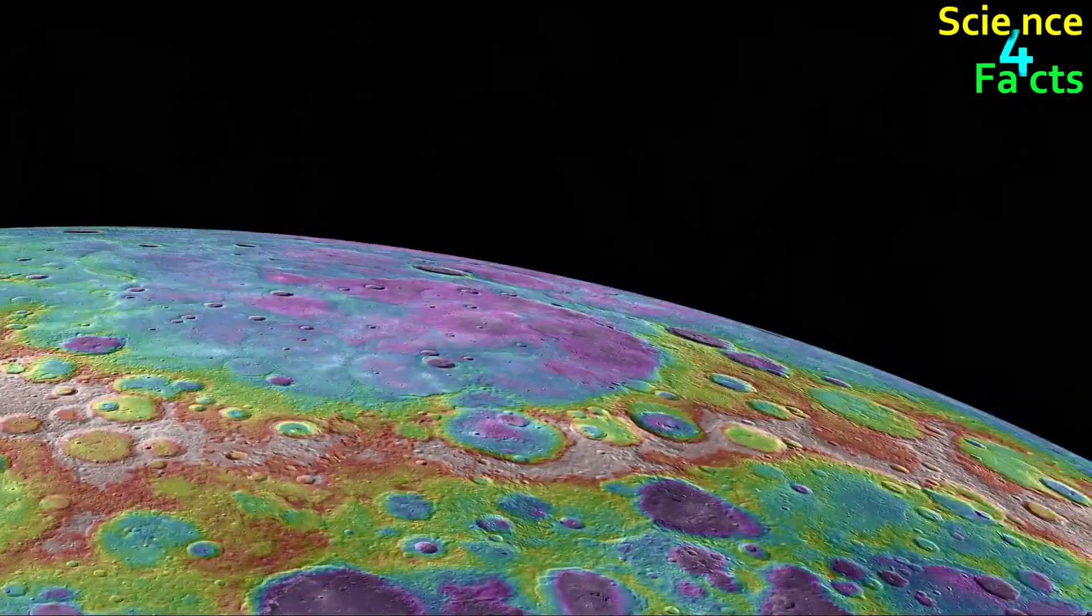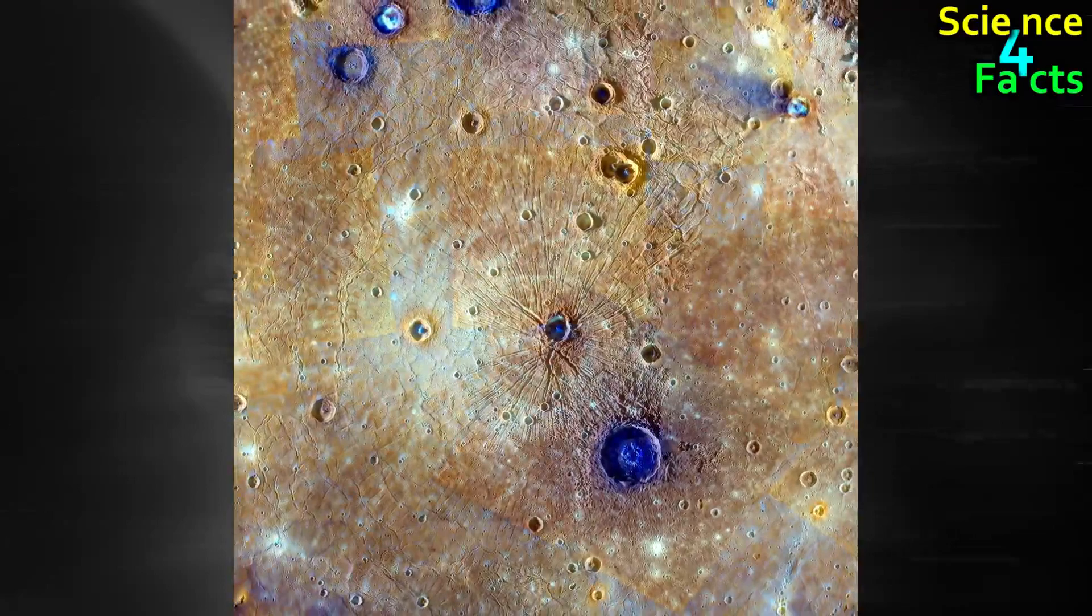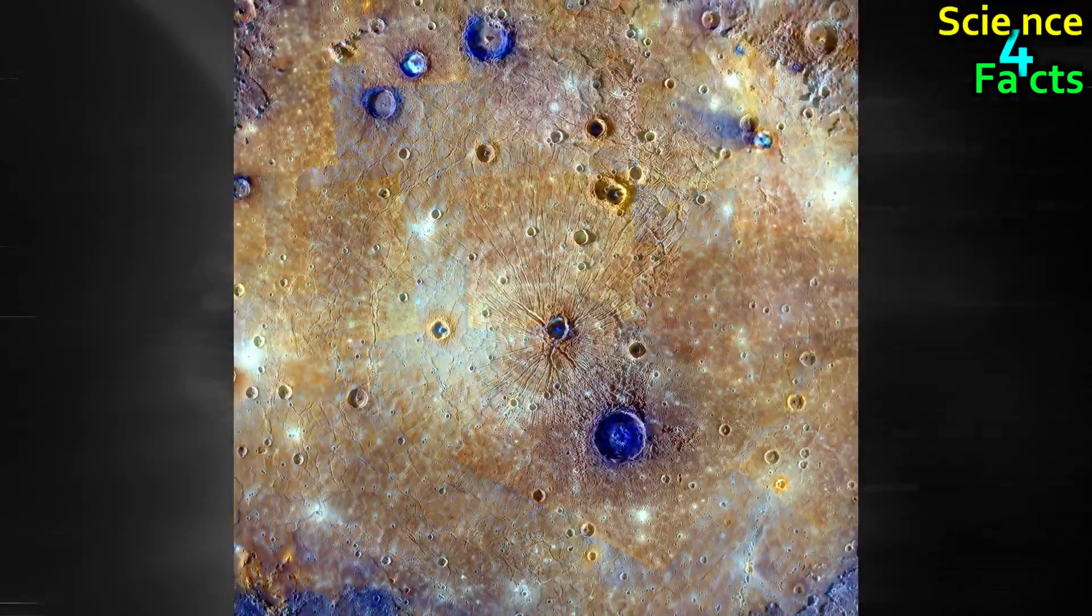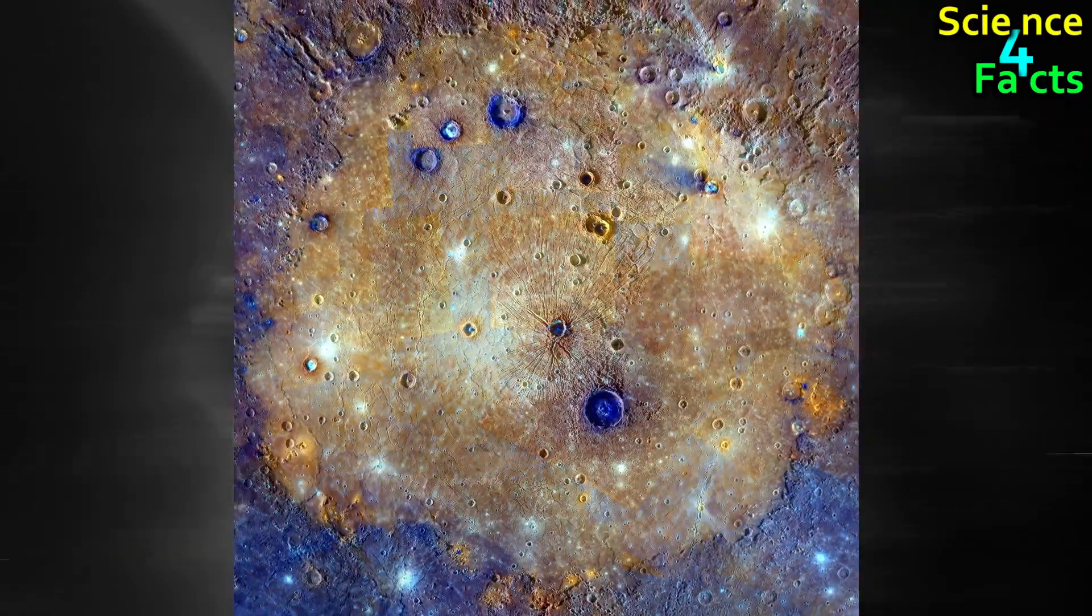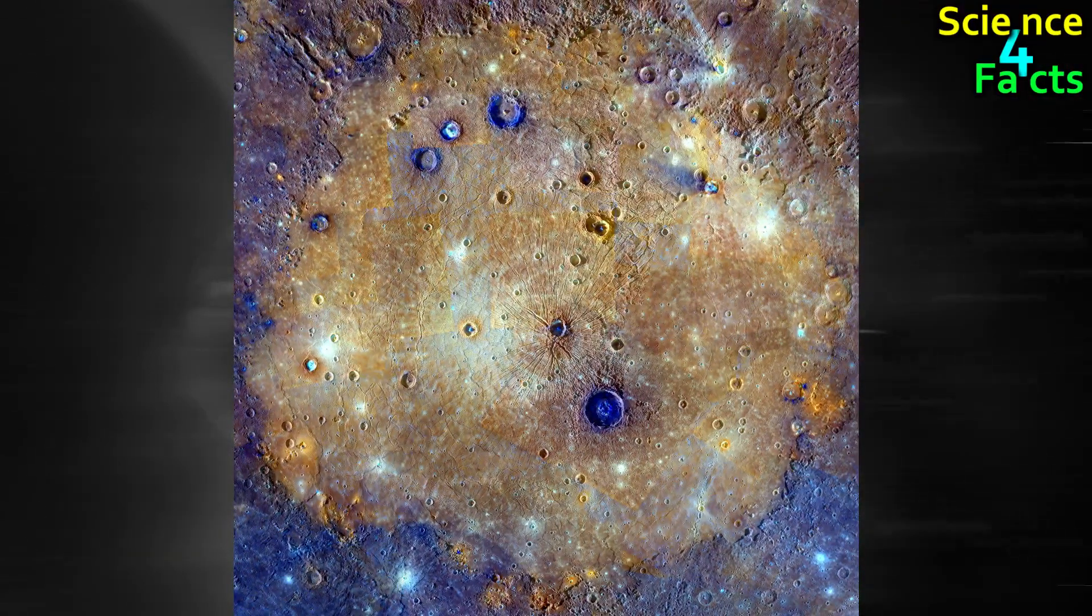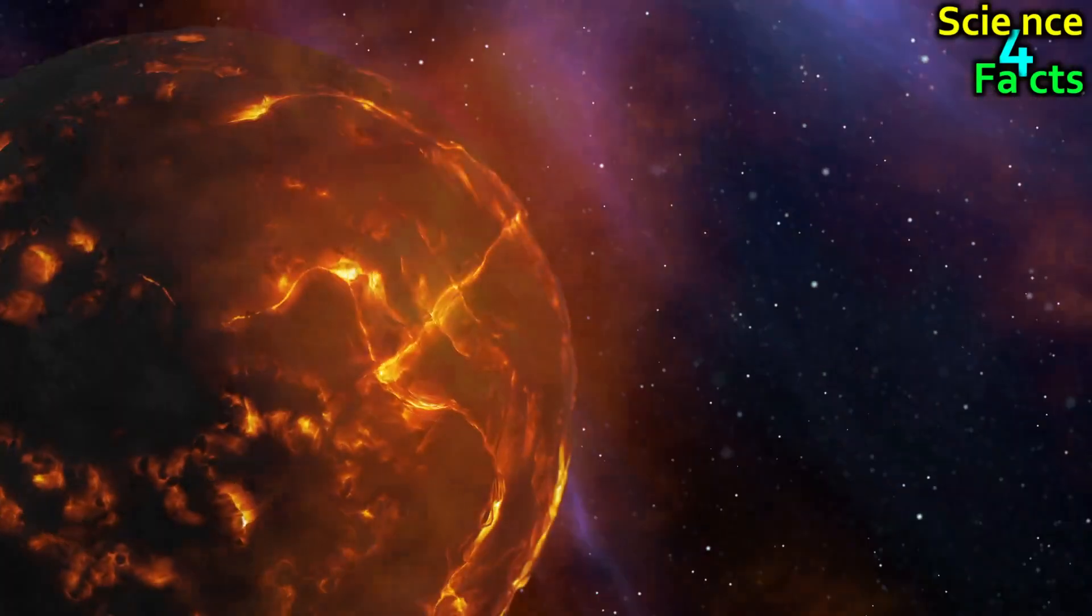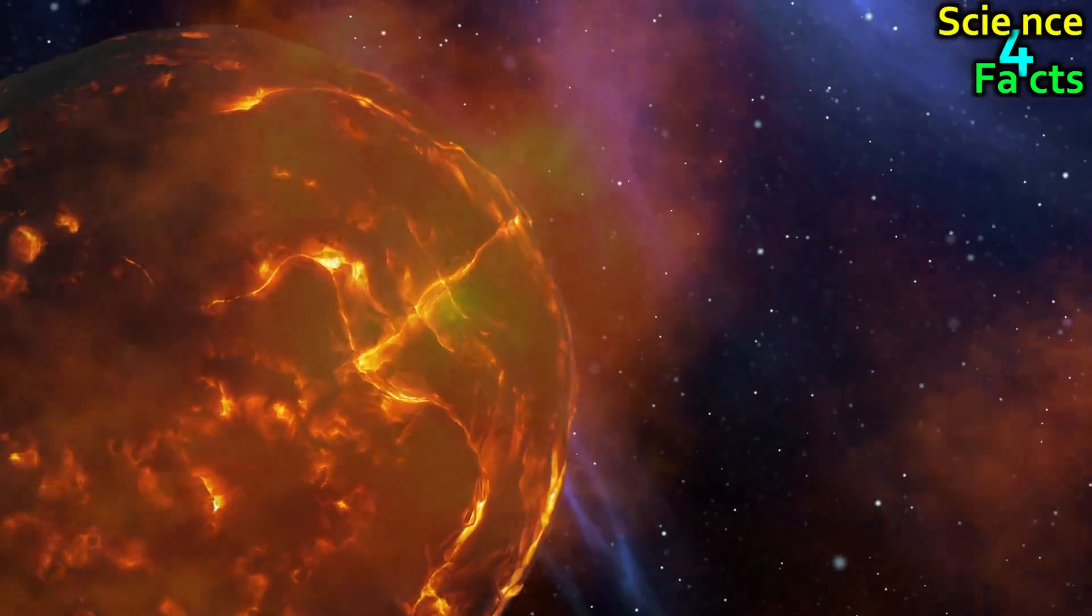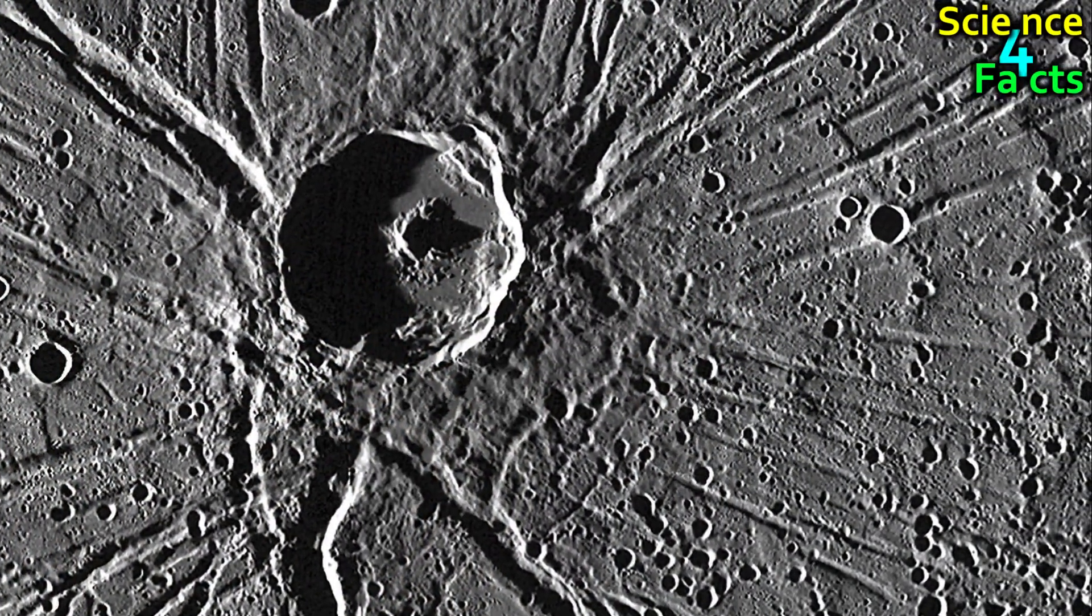One of the most prominent features on Mercury's surface is the Caloris Basin, which is a large impact crater that measures around 1,550 kilometers or 960 miles in diameter. The impact that created the Caloris Basin was so massive that it caused shockwaves that traveled across the planet and caused other geological features, such as the strange, spider-like fractures that are visible on the surface.